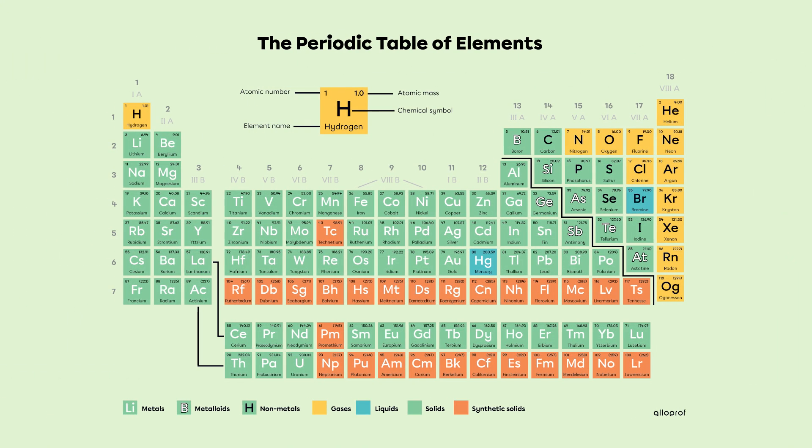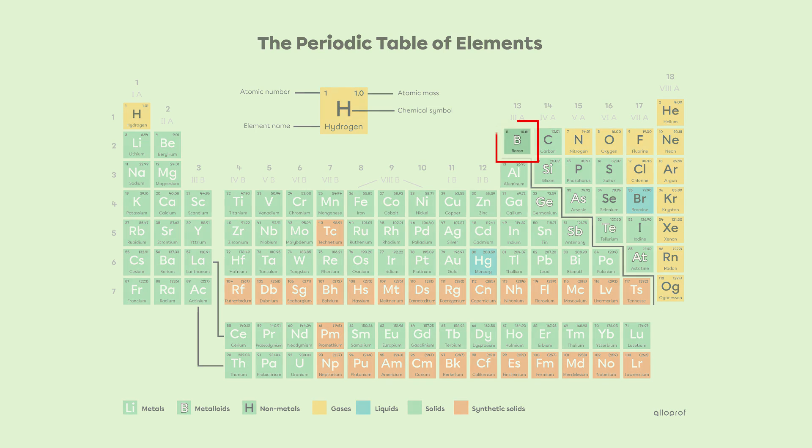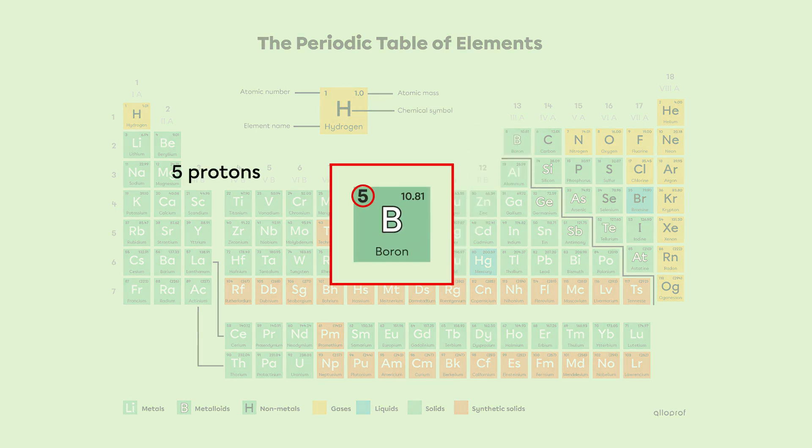A neutral atom has an equal number of protons and electrons. For example, the boron atom has 5 protons and 5 electrons.